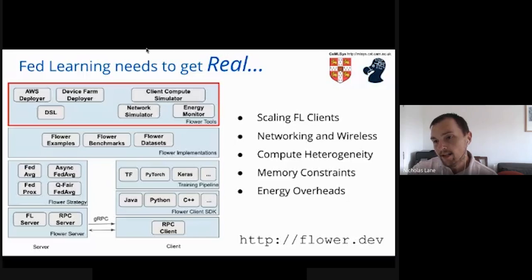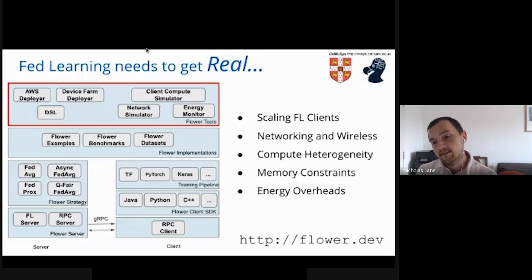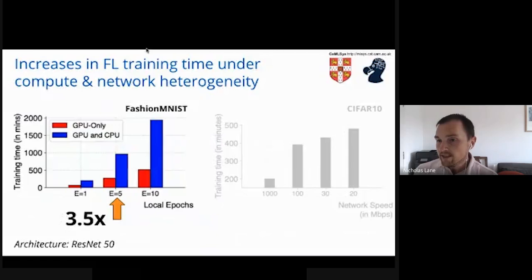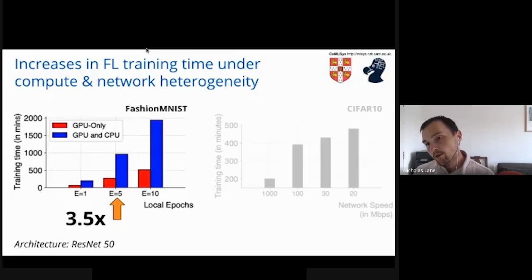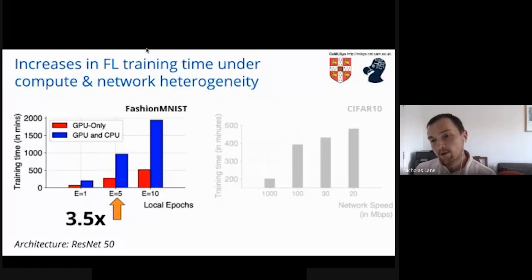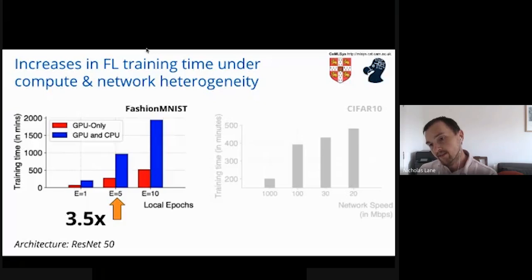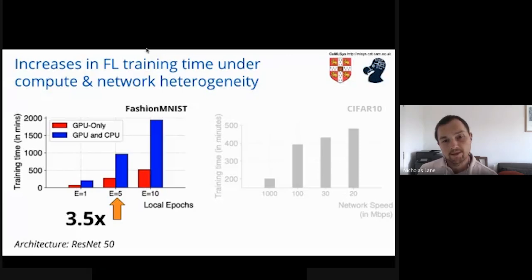What I'm highlighting here in this red box is really the key component of the tool that makes it fairly unique. You can have mixtures of instances and real devices — smartphones, embedded devices with energy monitors hooked up to them, and so on. This first result is about a training situation where you have heterogeneity in the pool of clients. The red bar shows all clients with uniform compute and GPUs; the blue bar is when we introduce one client that is much less powerful and can only use a CPU. Flower easily allows you to see that training time goes up.